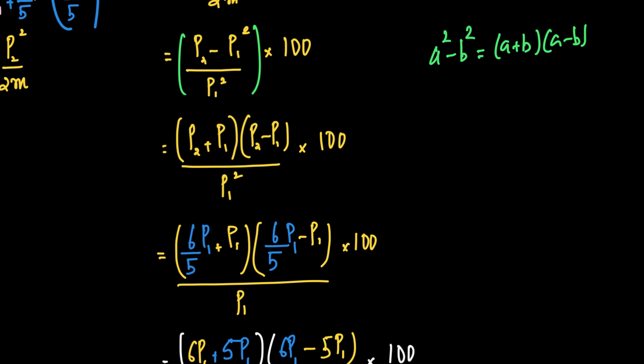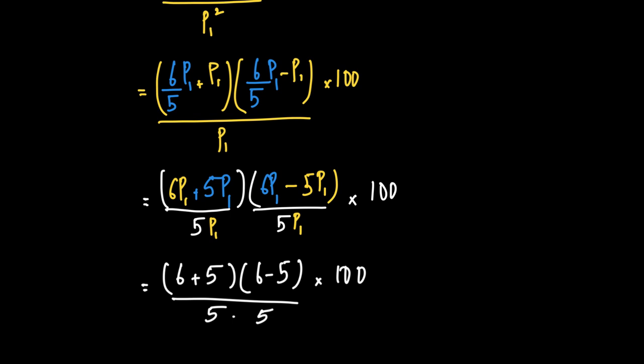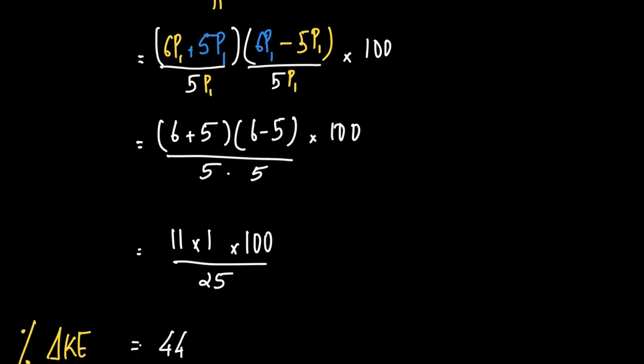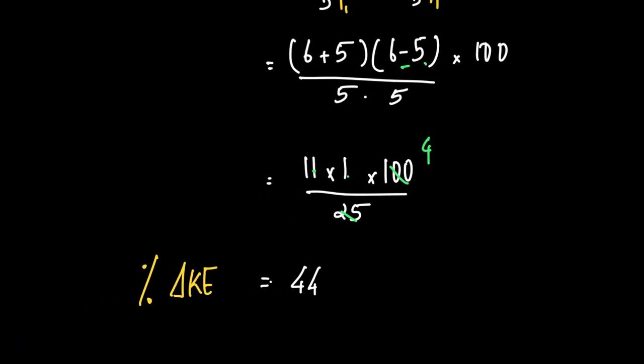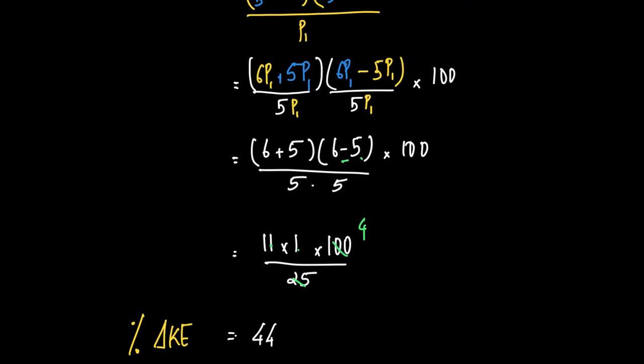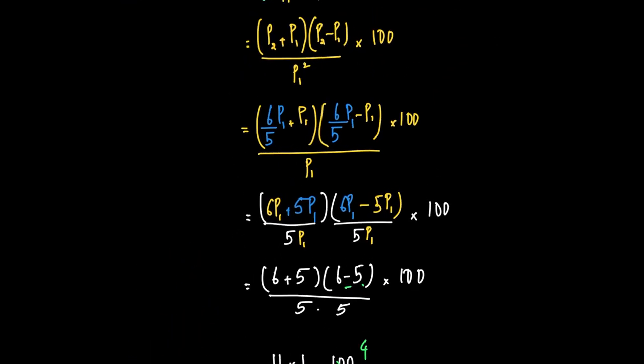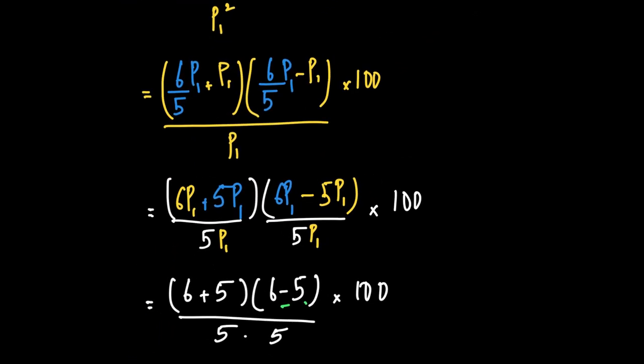And then I go on for P2 is 6 by 5 P1, P2 is 6 by 5 P1. And using fractions, it becomes very easy to solve, because 6 plus 5 is 11, 6 minus 5 is 1. By 25, 25 times 100 is 4, 4 into 11 is 44. So that's another way of looking at the equation. Maybe you can make use of this as well.